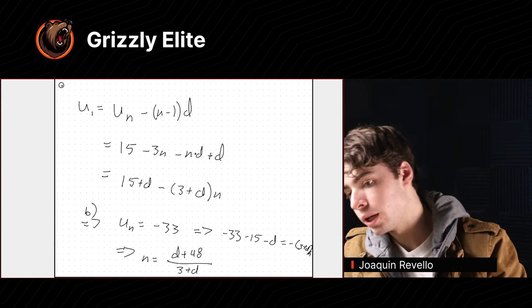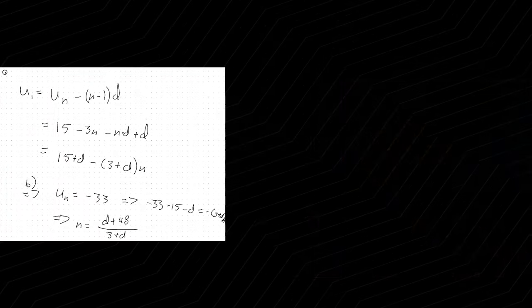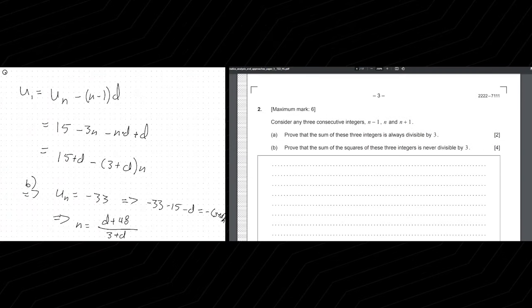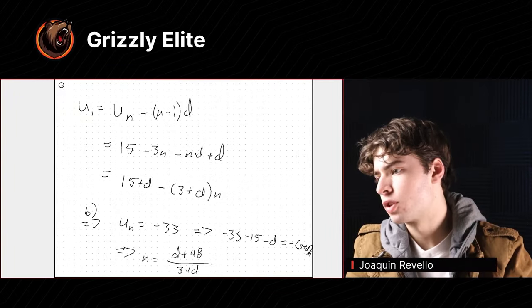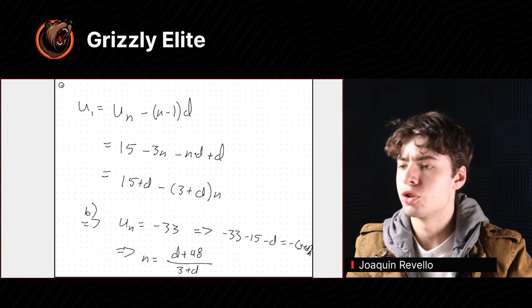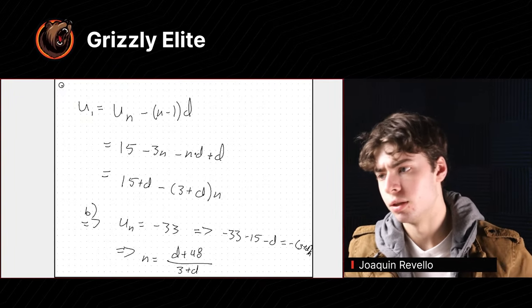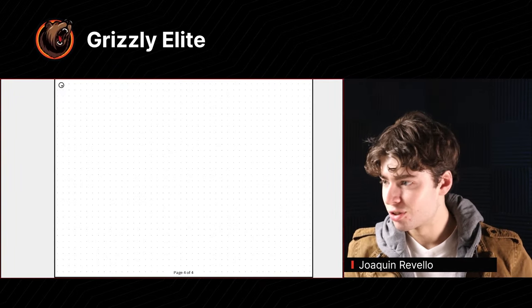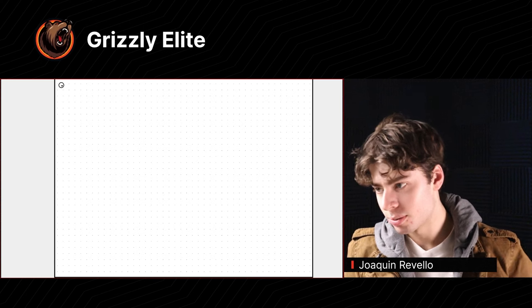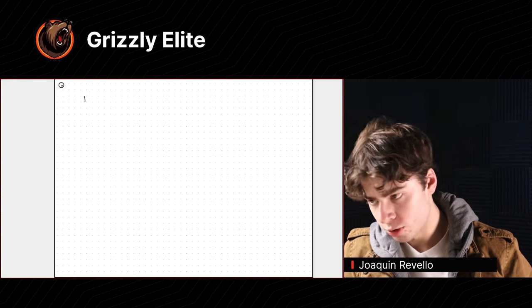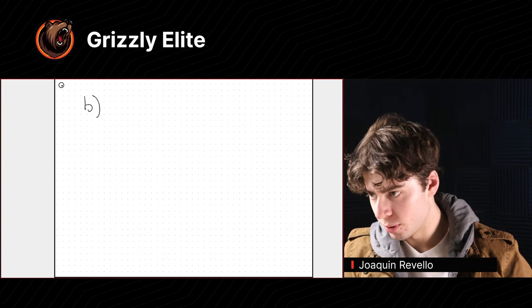We're already five minutes into my 15 minutes. Let's go on to the next one. Consider any three consecutive integers. Prove that the sum of these three integers is always divisible by three.